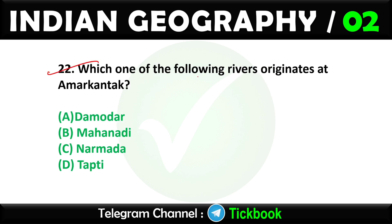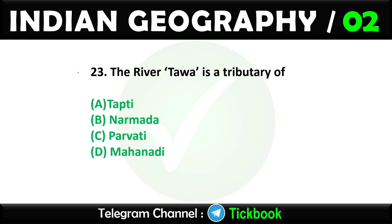Question twenty-two: Which one of the following rivers originates at Amarkantak? Option number C is the right answer: Narmada. Question twenty-three: The river Tawa is a tributary of. Option number B is the right answer: Narmada.